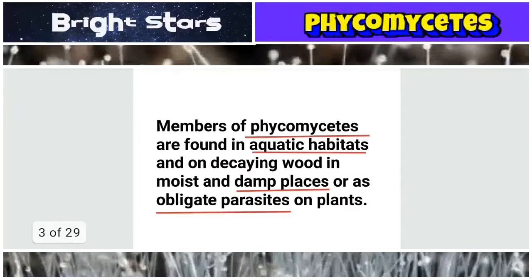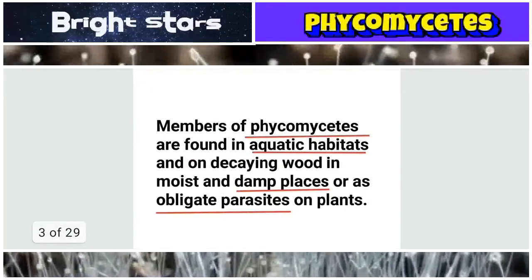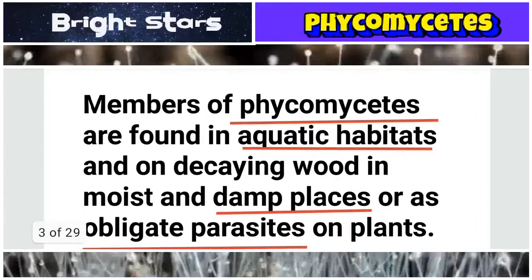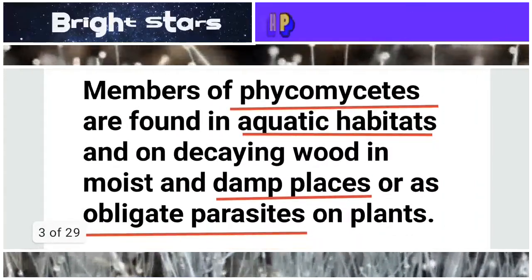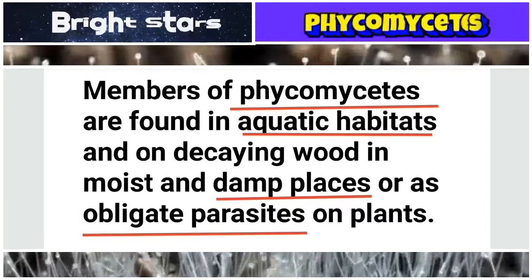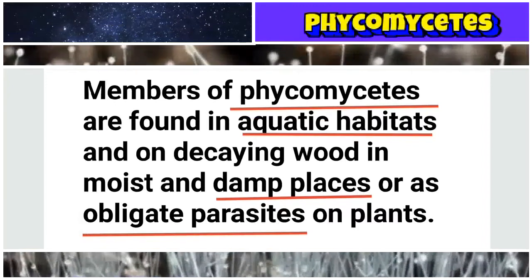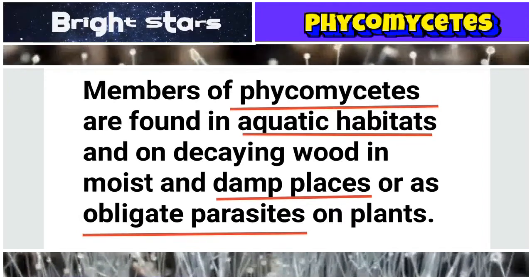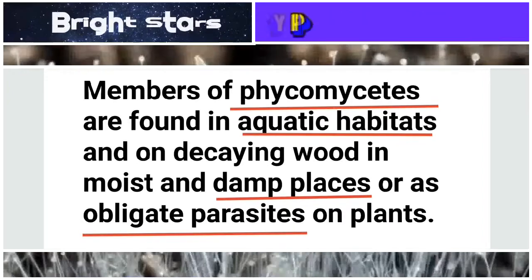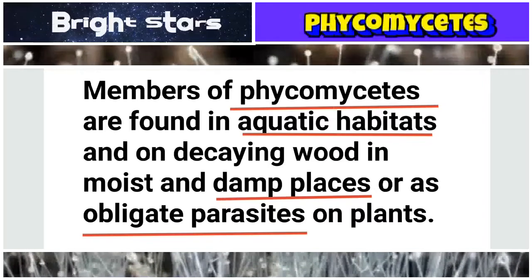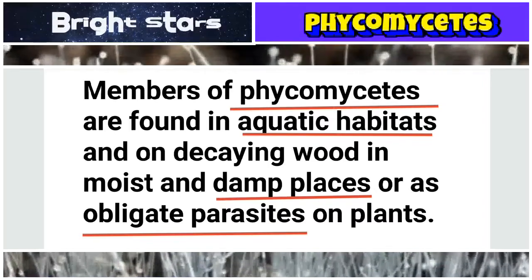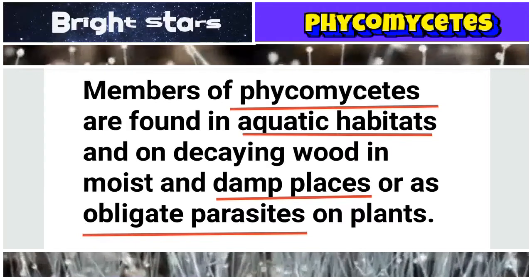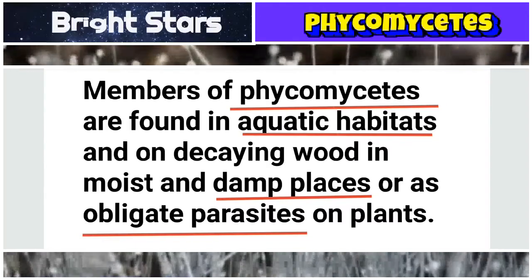The first sentence in this paragraph is: members of Phycomycetes are found in aquatic habitats and on decaying wood in moist and damp places, and as obligate parasites on plants. The important words here are: Phycomycetes, aquatic habitats, damp places, and obligate parasites.